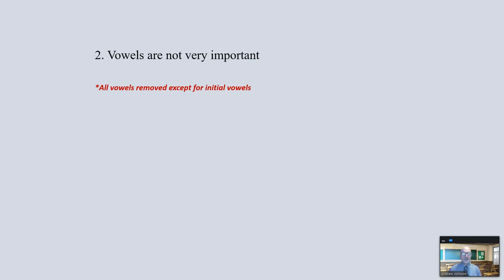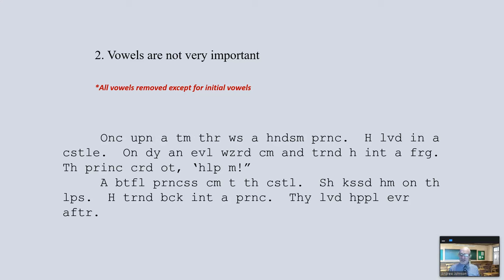We spend a lot of time on diphthongs and trigraphs and vowels, but actually they're not very important. For example, all the vowels have been removed in the next section except for the initial vowels, and most of us can still read it: 'Once upon a time there was a handsome prince. He lived in a castle. One day an evil wizard came and turned him into a frog. The prince cried out, Help me!' You get the idea — we can read this with all the vowels except the initial ones removed.